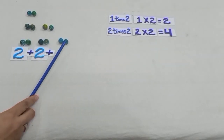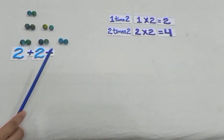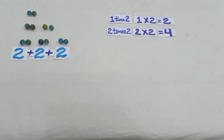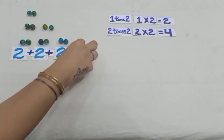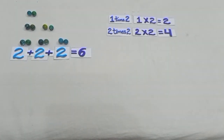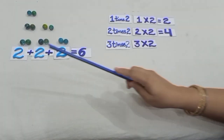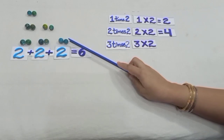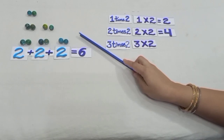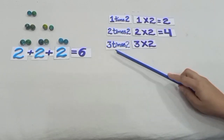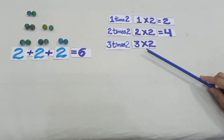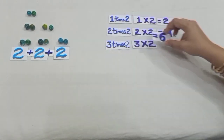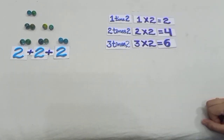Earlier we had 4 marbles and now 2 marbles more, so we have 6 marbles. You can see we have 3 groups with 2 marbles in each group, and we write it as 3 times 2, that means 3 into 2 is equal to 6.